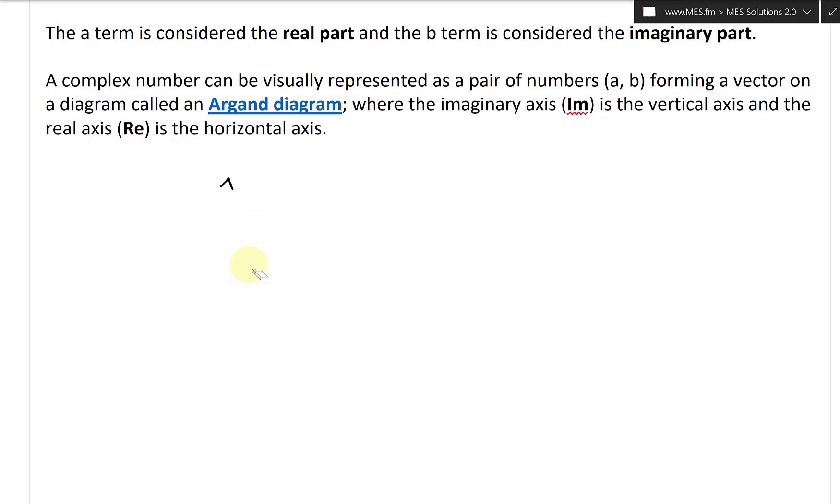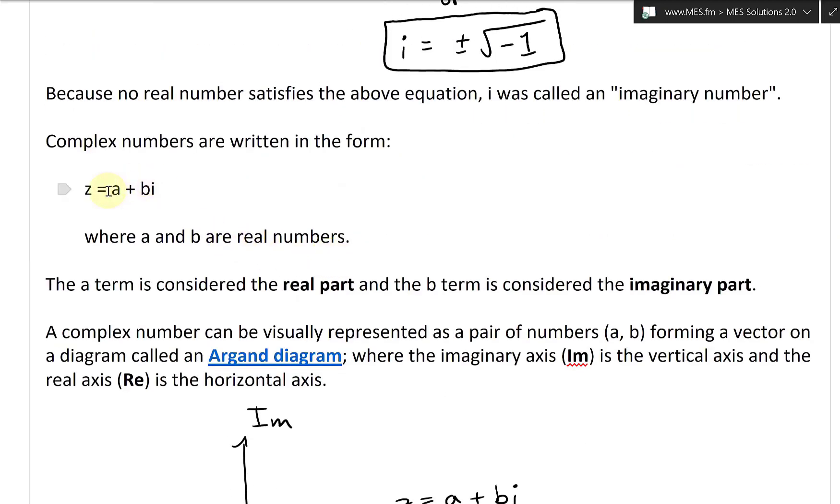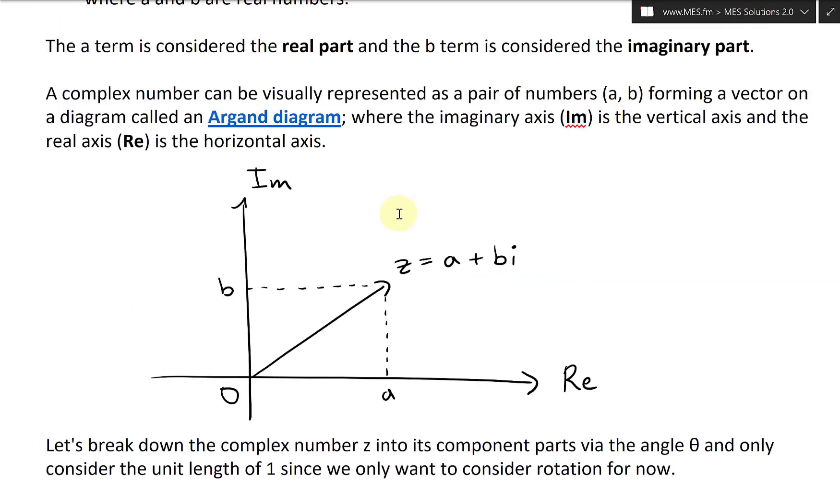Let's just draw this out. So we have the real part, call this Re axis, there's the imaginary Im, and this is the origin. You have a vector here, and this vector is a complex number, so it's going to be called z = a + bi, where the components are: a is the real part and then the vertical part is the imaginary or b.